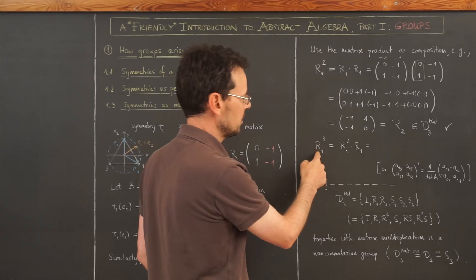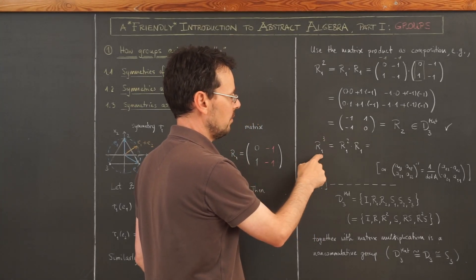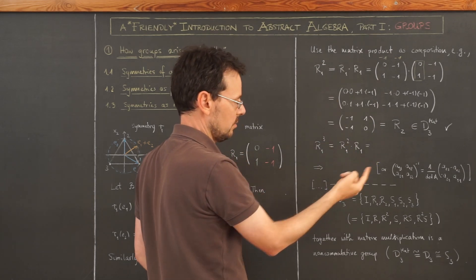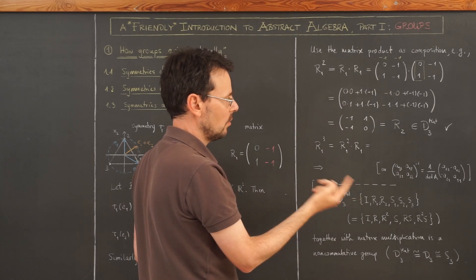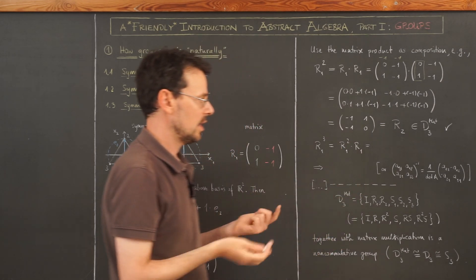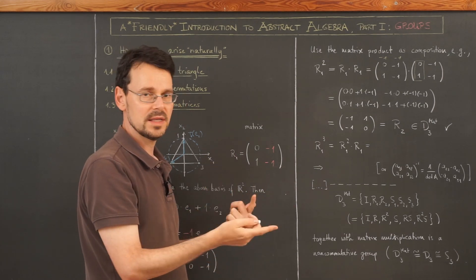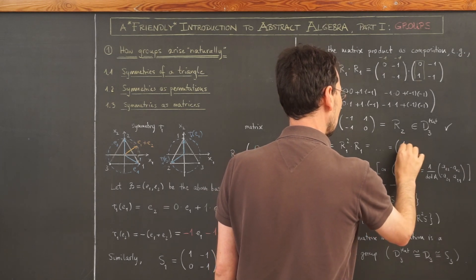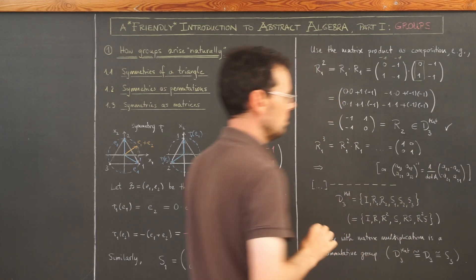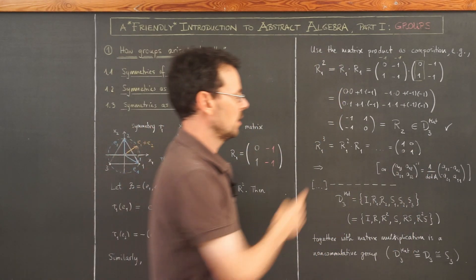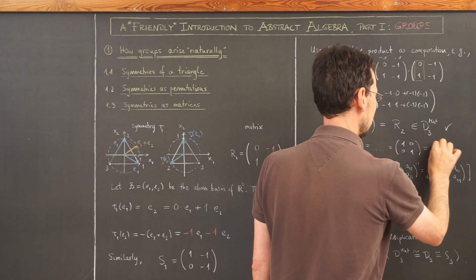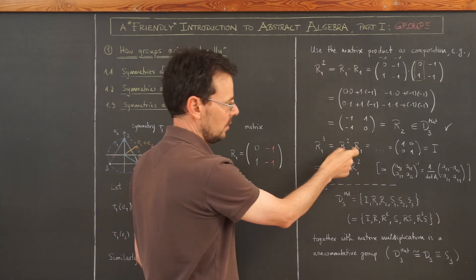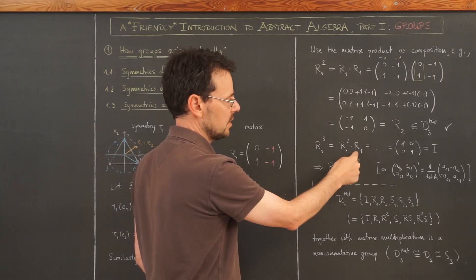And what happens if I take the third power of R1? This is defined as this guy here, the square of R1 times R1 times itself. Well, what we expect is that we get the identity because we have rotated by 360 degrees. And actually, if you do the calculation, you end up with this matrix, which is nothing but the matrix of the identical transformation. This means we have found an inverse of this element here, namely this guy here, R1 squared or simply R2.